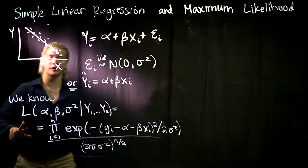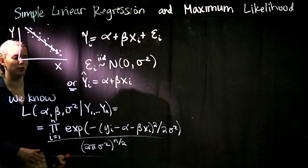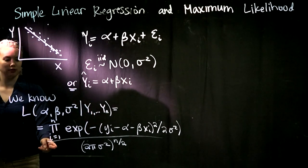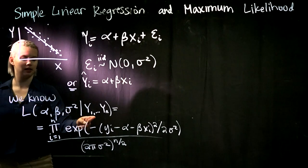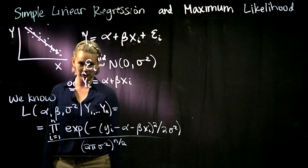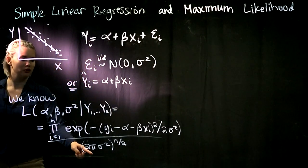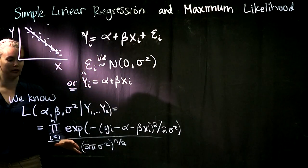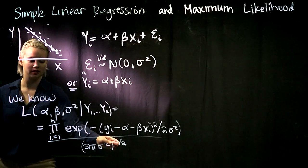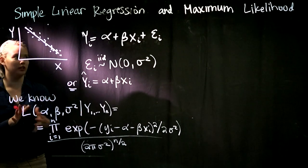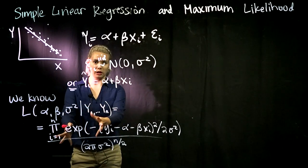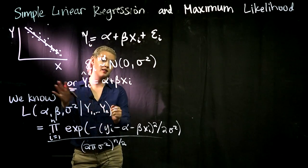So what we've got so far is that the likelihood of our parameters, alpha, beta, sigma squared, given our data y1 through yn, is equal to the product of exp of negative (yi minus alpha minus beta xi) squared divided by 2 sigma squared, divided by the product of 2 pi sigma squared to the n over 2. So that's our likelihood and we're trying to tie this back to the method of ordinary least squares. Let's keep working with this likelihood to see where it goes.